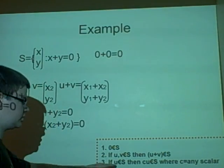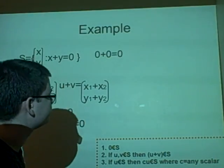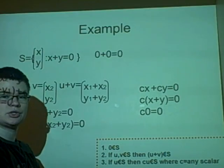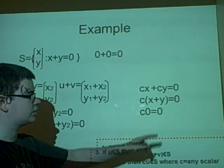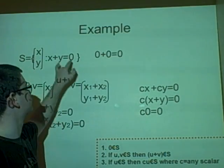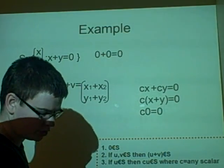And the third rule is that if we multiply anything by a scalar. So, this is pretty straightforward as well. So, we have cx plus cy equals zero. So, c times x plus y equals zero. So, c, and we know this is zero from up here. So, c times 0 equals zero. So, that's pretty straightforward as well.